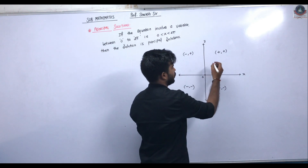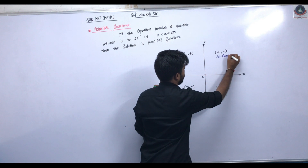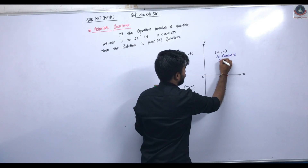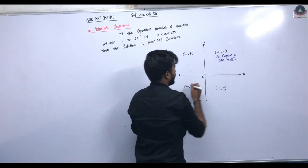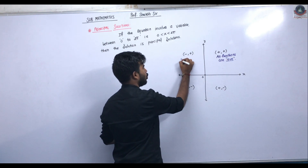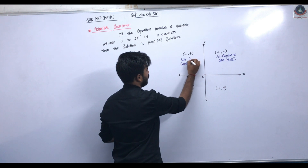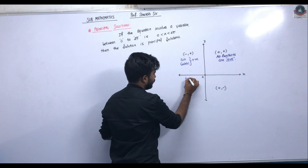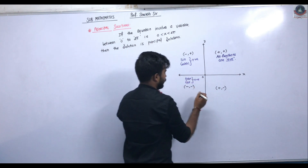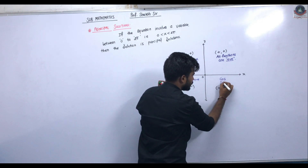In the first quadrant, all functions are positive. In the second quadrant, sine and cosec are positive. In the third quadrant, tan and cot are positive. In the fourth quadrant, cos and sec are positive.